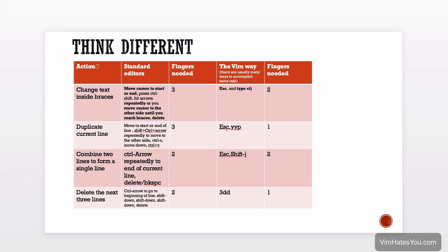In Vim, YY means copy the current line — Y means yank and the second Y specifies the current line. P means paste just below where you are, and you can do this with a single finger. To combine two lines into one, instead of navigating to the end of a line and pressing delete, in Vim you just press Escape to enter normal mode and then Shift+J, no matter where you are in the line — that combines the line after you and removes the trailing newline. To delete three lines, instead of using Control+Arrow, Shift+Delete, and moving down three lines, in Vim you just press 3 then DD in normal mode. DD means delete the current line, just like YY means yank or copy — and the 3 says do that three times. You only need one finger.